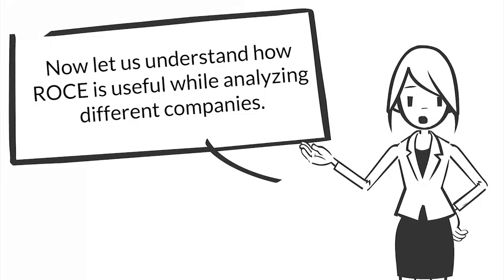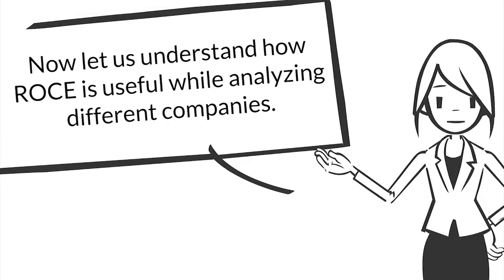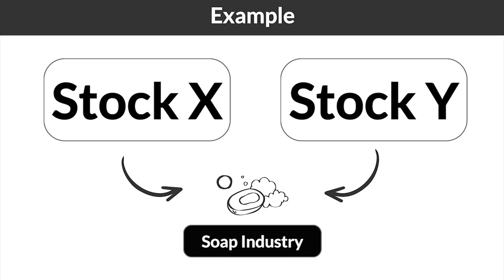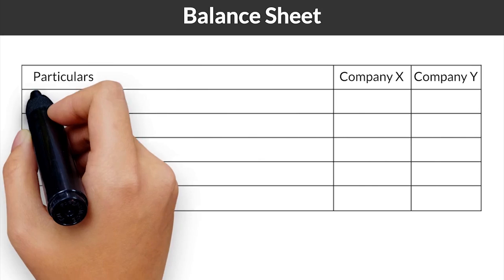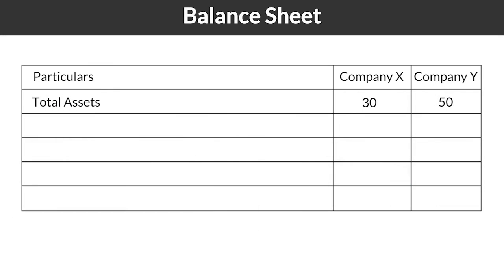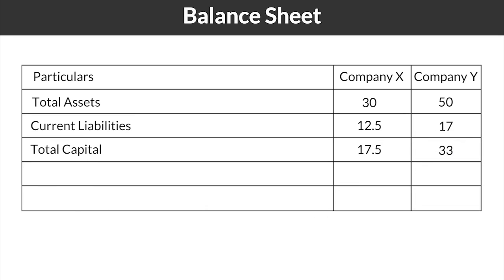Now, let us understand how ROCE is useful while analyzing different companies. Say, stocks X and Y belong to the soap industry and you intend to pick one of them. Let us look at the balance sheet of these two companies. The total assets of company X and Y are 30 lakhs and 50 lakhs each. This is when their current liabilities are 12.5 and 17 lakhs. Hence, the total capital employed is total assets less the current liabilities, which comes down to 17.5 lakhs for company X and 33 lakhs for company Y.